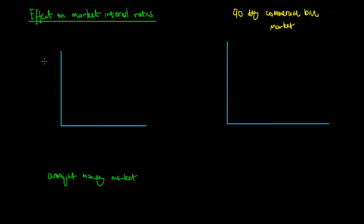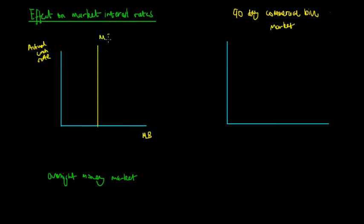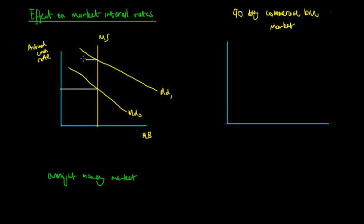The cash rate, or the interest rate on the overnight money market, is also known as the actual cash rate. The actual cash rate isn't necessarily the target cash rate because it fluctuates due to changing demand and supply. Assuming the money supply is constant on the x-axis as the monetary base, the demand for the actual cash rate has increased from MD0 to MD1, so the actual cash rate has risen from I0 to I1.